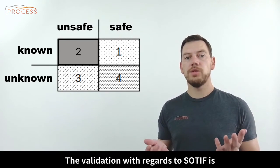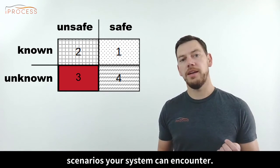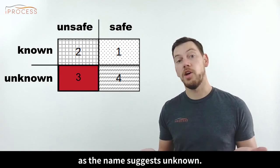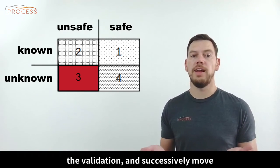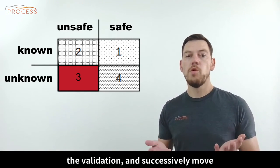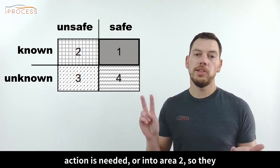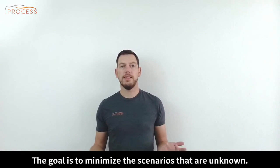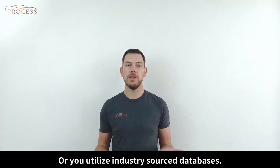The validation with regards to SOTIF covers area 3: the unknown and unsafe scenarios your system can encounter. This is the most challenging step since those scenarios are, as the name suggests, unknown. The way it works is that you have to explore more and more scenarios during the validation and successively move them into either area 1, where no further action is required, or into area 2, so they will be covered by your verification. The goal is to minimize the scenarios that are unknown. To achieve this, you can either develop more and more scenarios yourself, or you utilize industry-sourced databases.